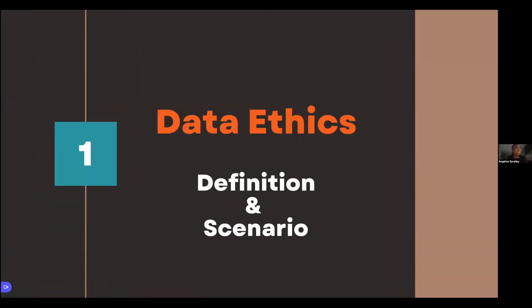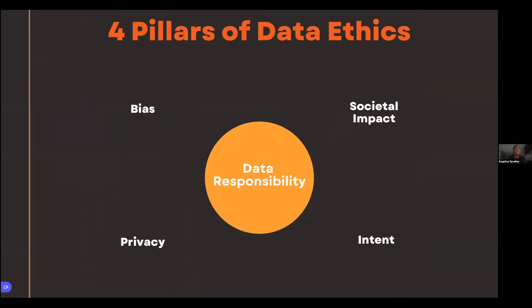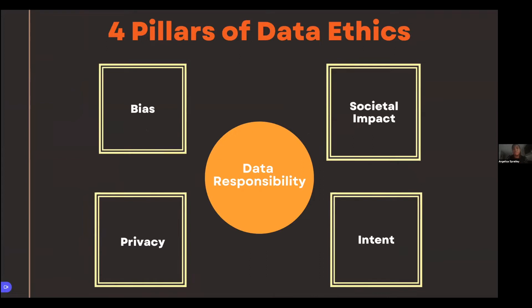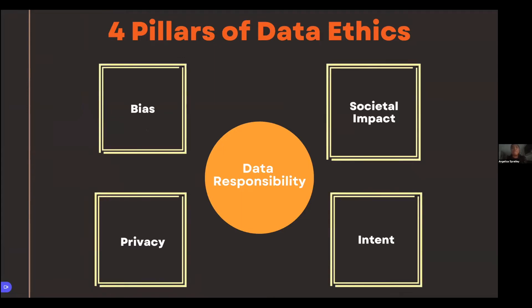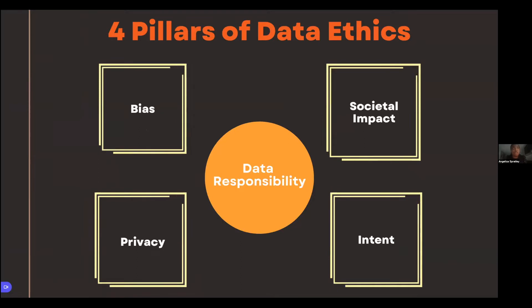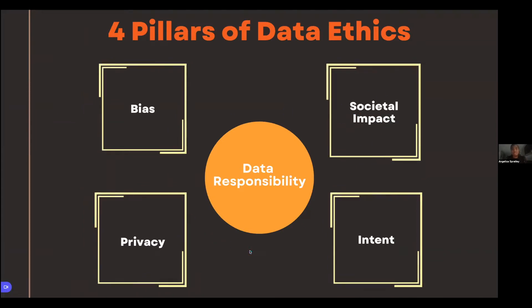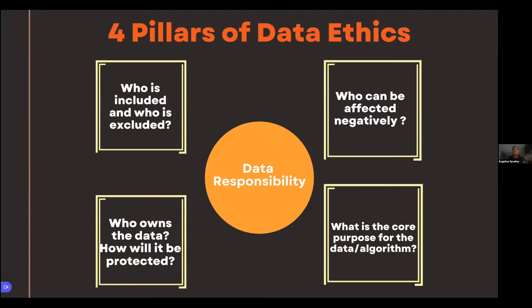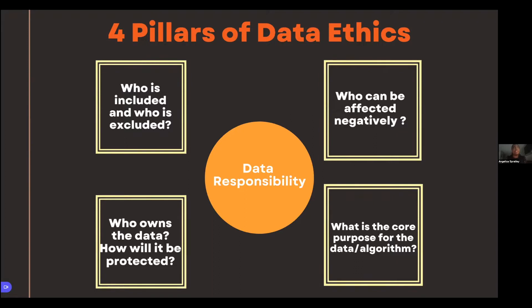Part one: data ethics. At the center of data ethics is data responsibility. You are responsible for the proper use of your data, for looking at bias within your data, and for analyzing how your machine learning model would be used. I like to think of this as four pillars: bias, societal impact, privacy, and intent. Within those four pillars, we have questions we can ask ourselves about data ethics and data bias.